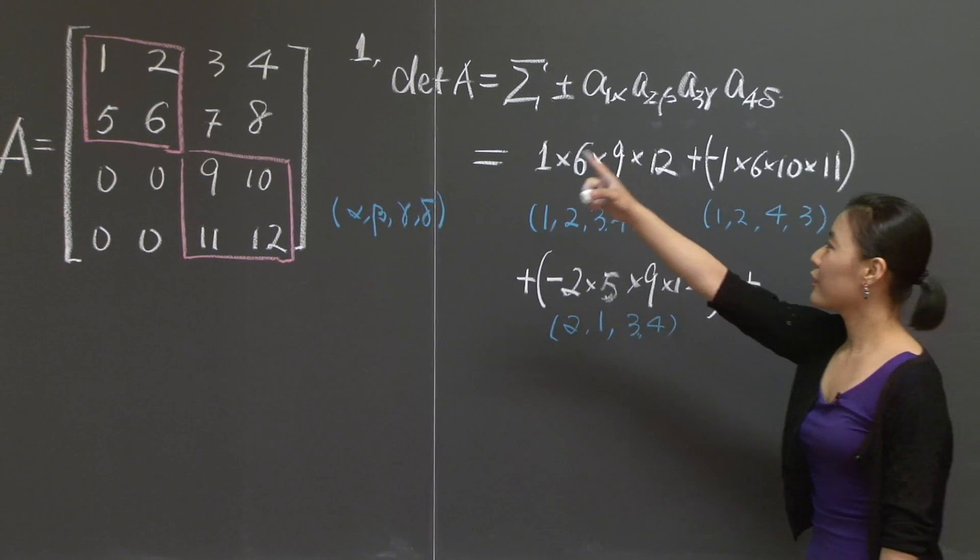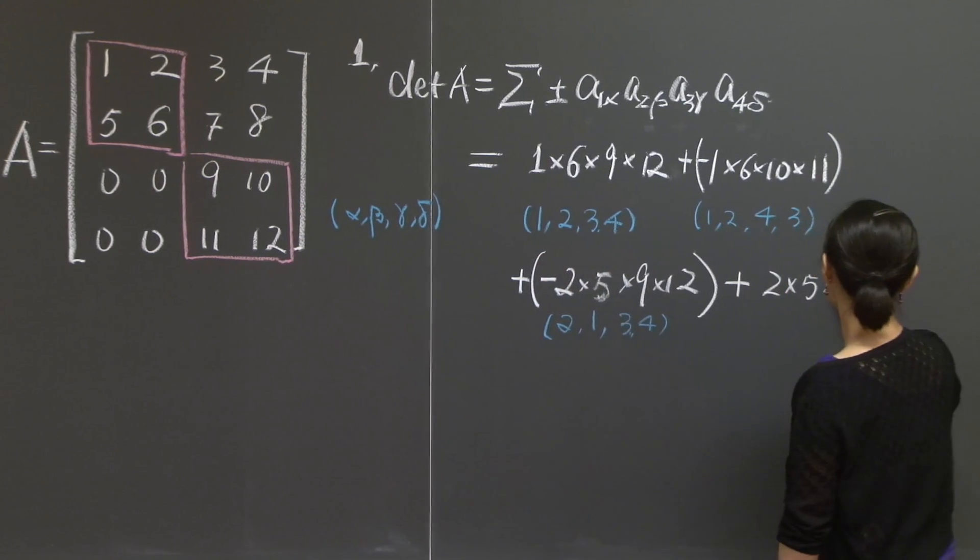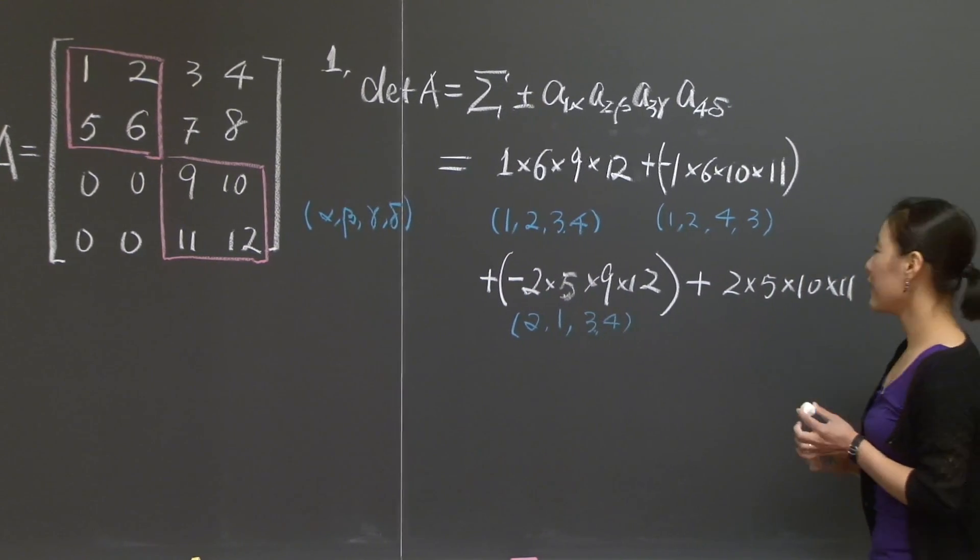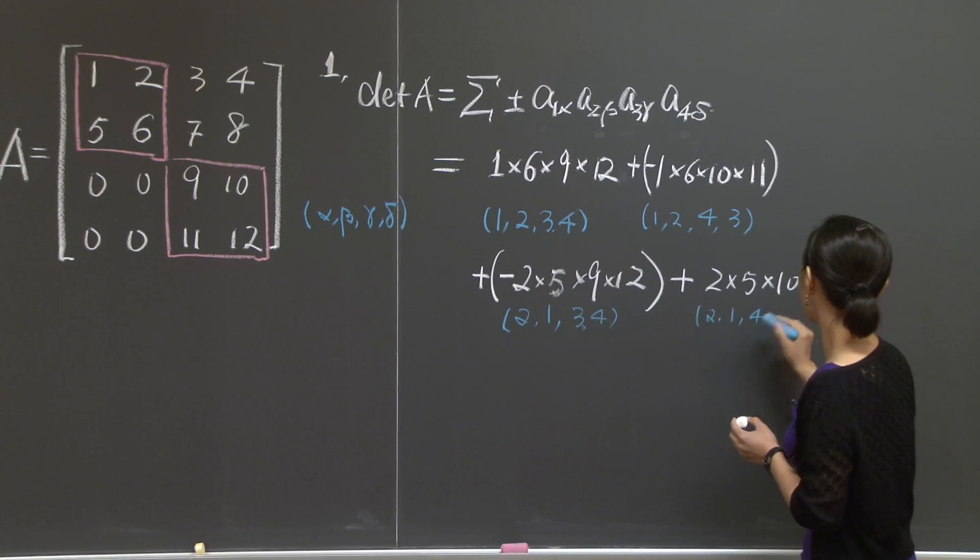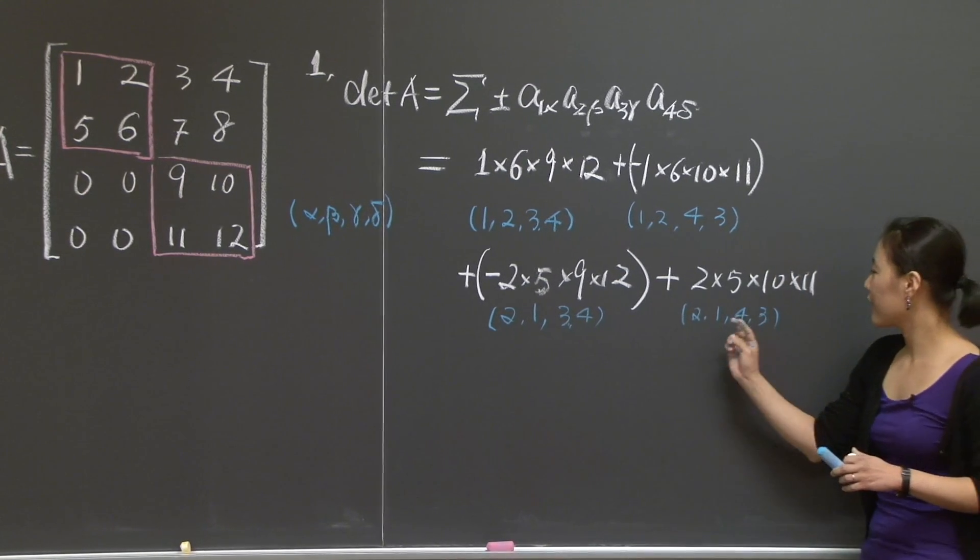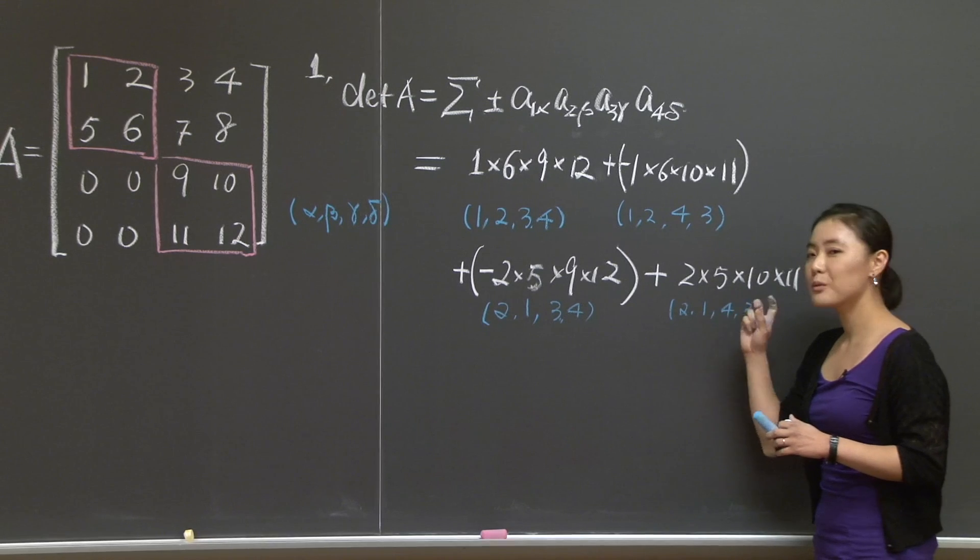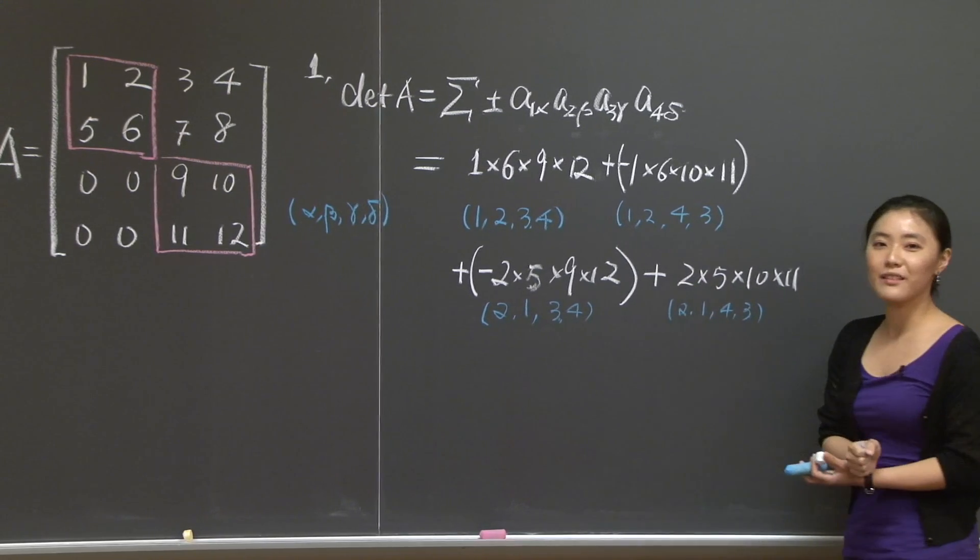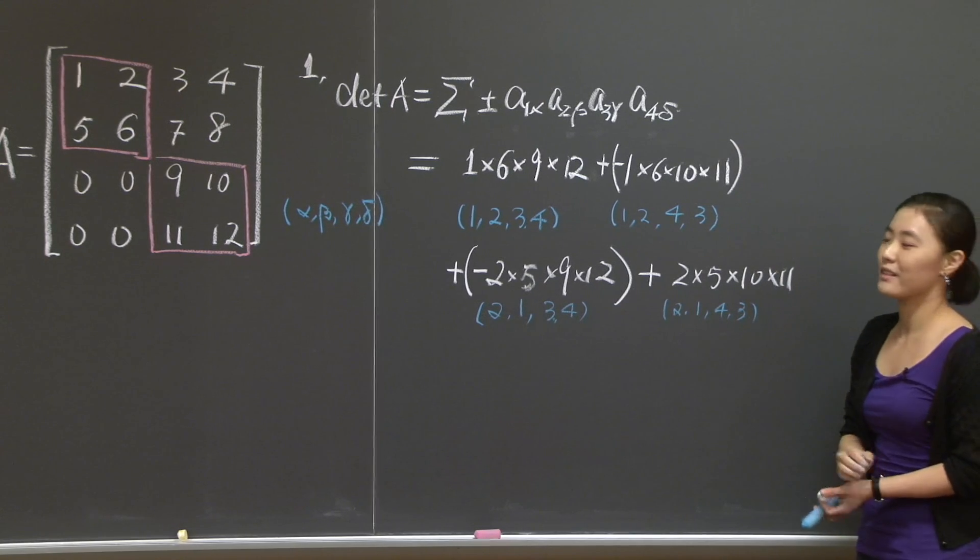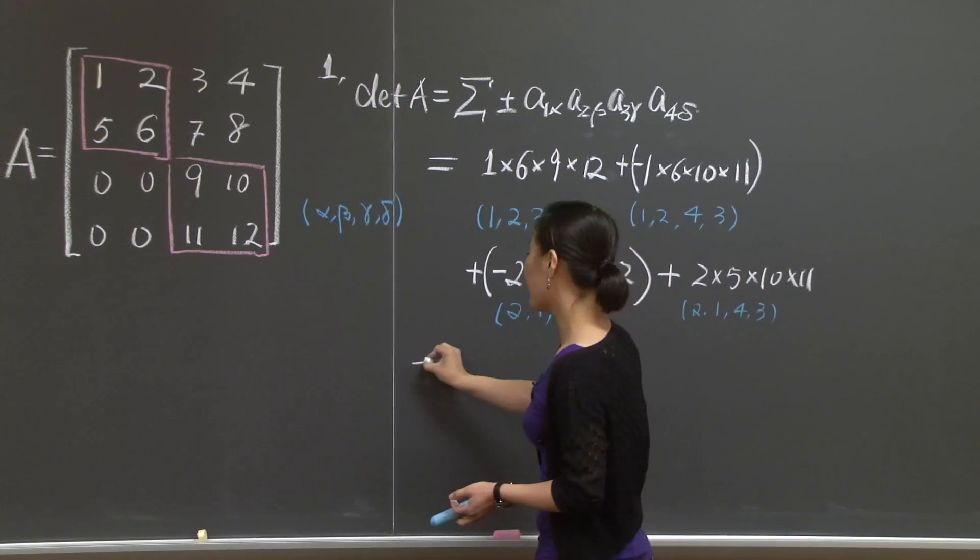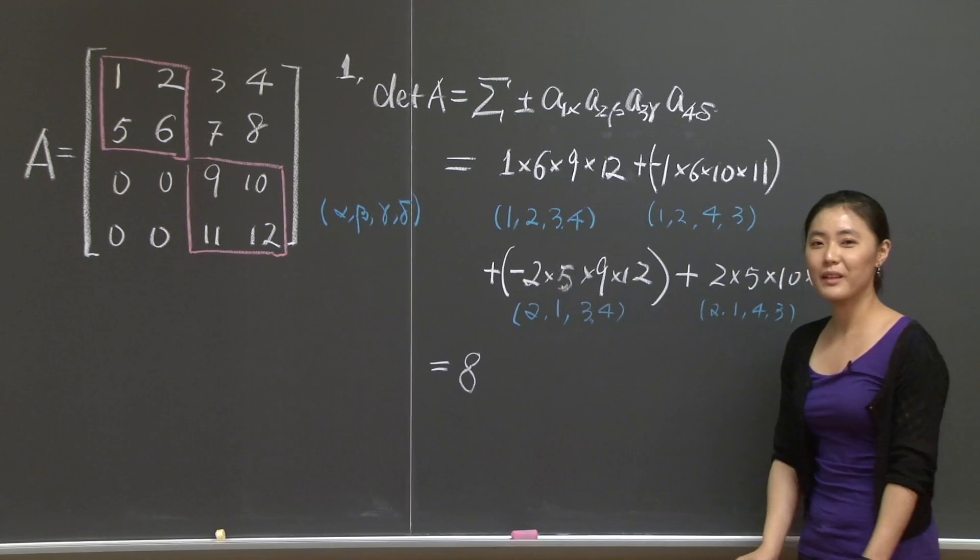The last one would be 2-5, 2 times 5 times 10-11, so times 10 times 11. Columns are A12, A21, A34, A43. So you exchange the first two spots and the last two spots to get back to 1, 2, 3, 4, but you have to do twice, two exchanges, which means you need a plus sign in the front. That's it. This big summation formula comes down to the sum of 4 terms. If you don't make any algebra mistake, the result should be 8. Did you get the right answer?